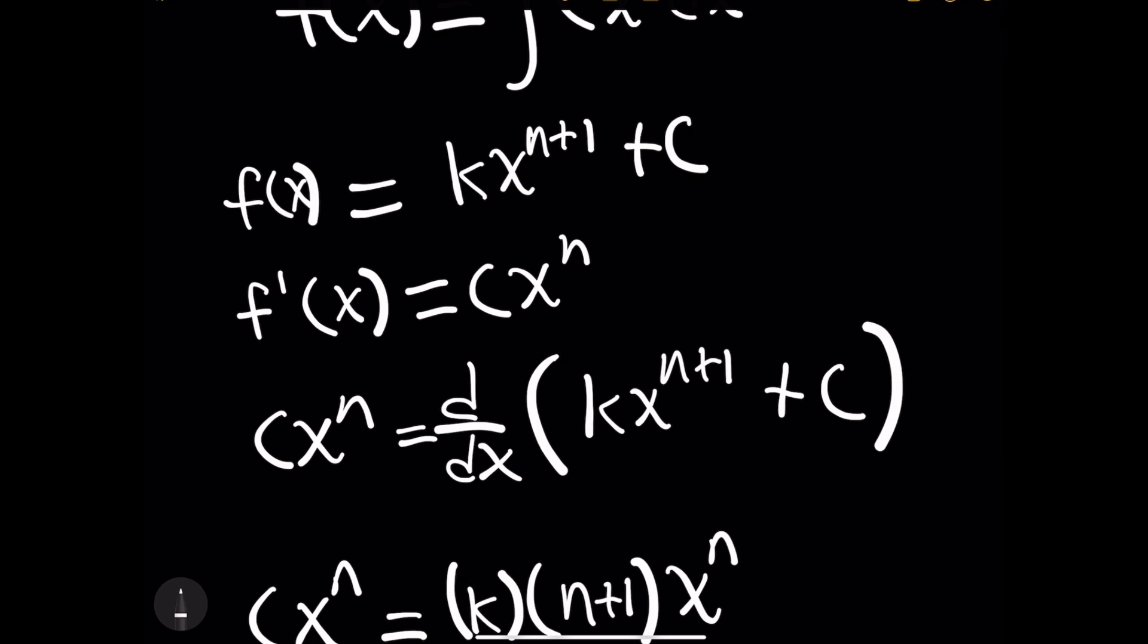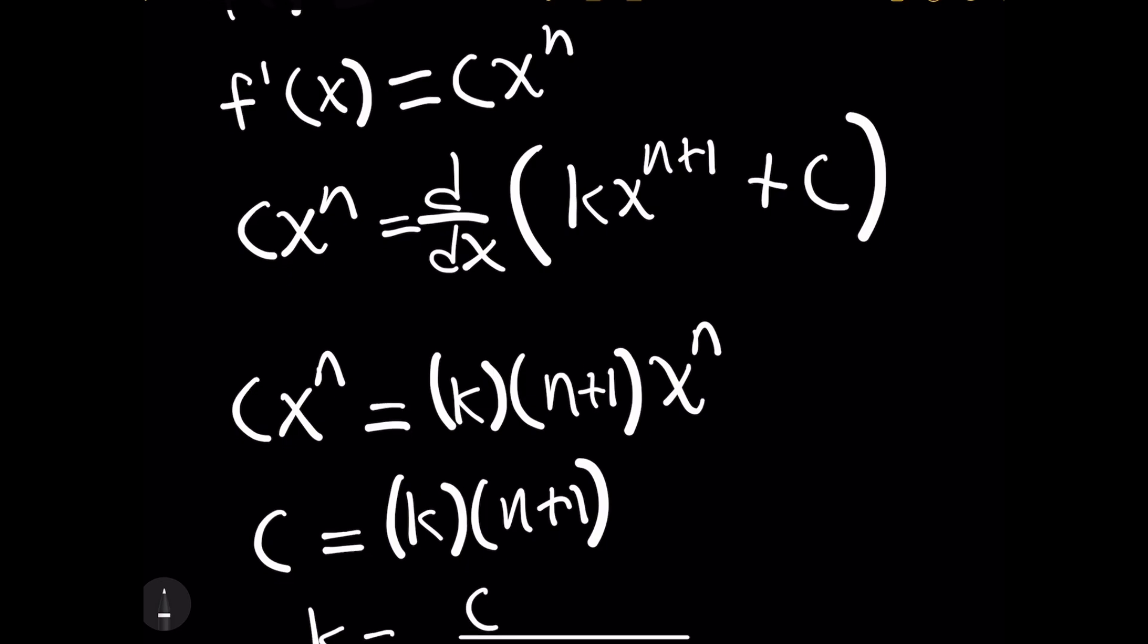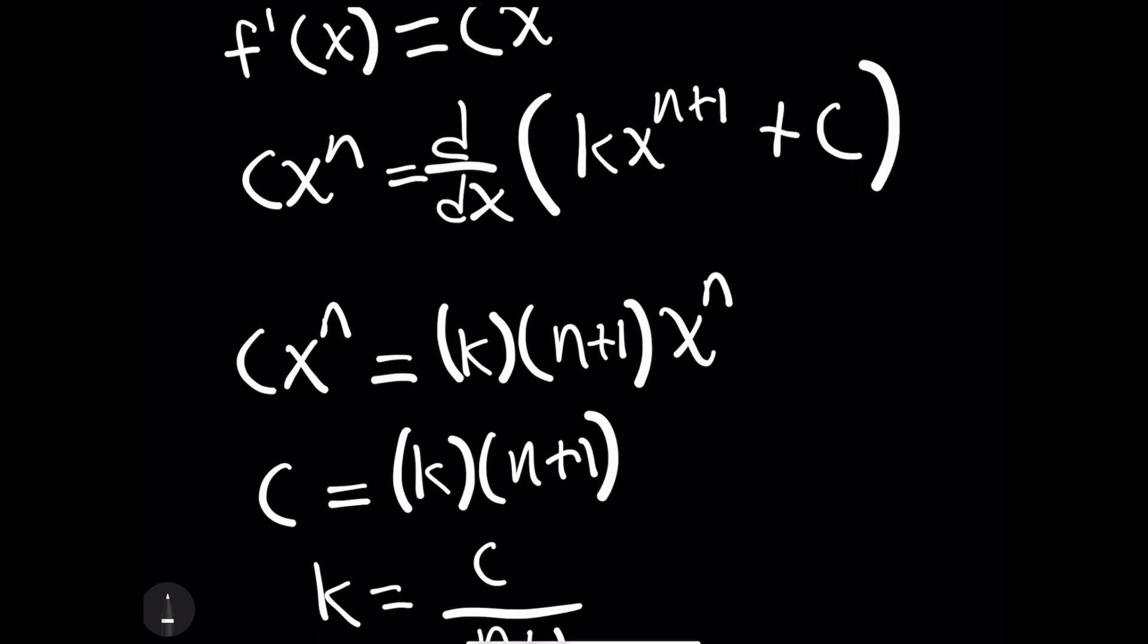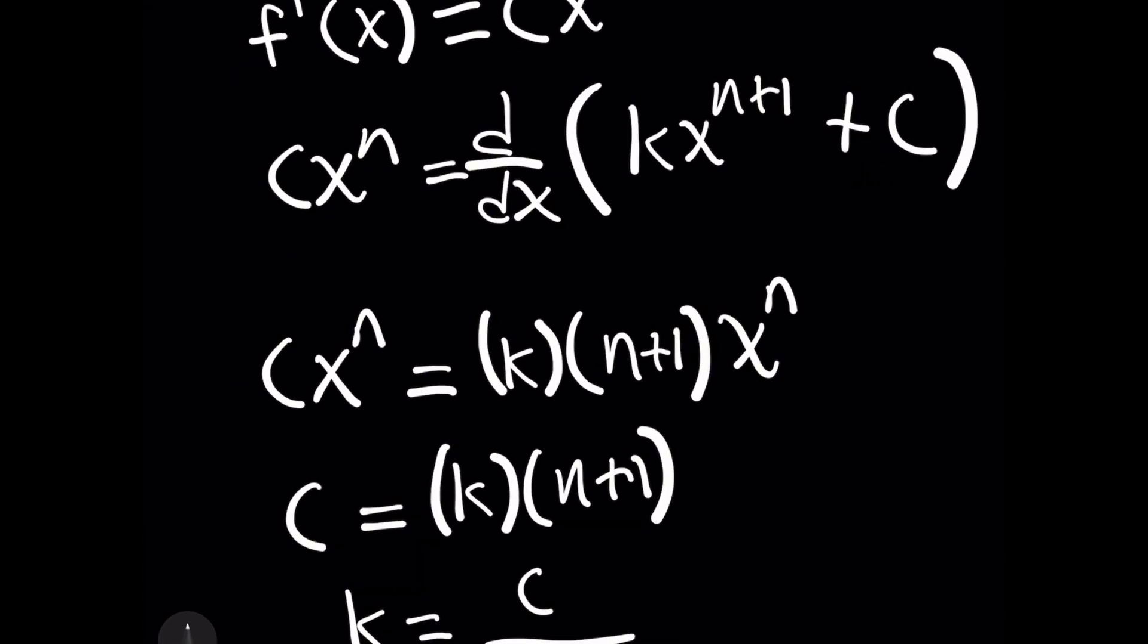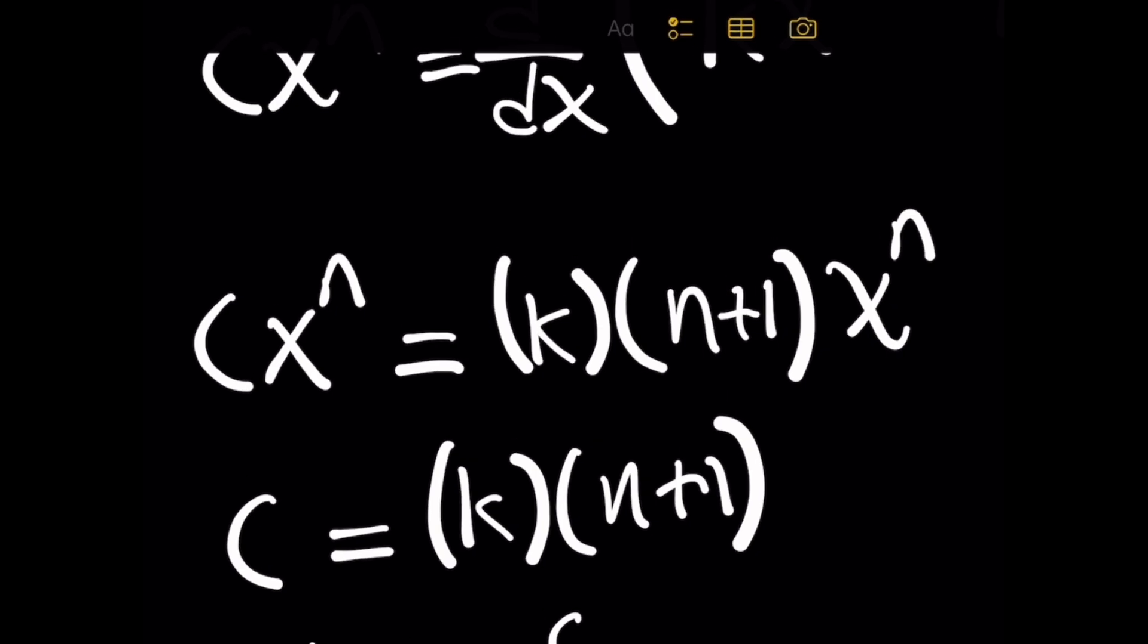Now, when you evaluate this by taking the derivative with respect to x, on the right hand side will be taking the derivative of k x to the n plus 1, plus c. And when you evaluate this further, you'll find after simplifying the expression, you'll get c x to the n equals k times n plus 1 x to the n, just like before. Now, once again, we want to solve here for k. But now you have a c on the left hand side of the equation. But that's not a problem, right? Because we have x to the n on both sides.